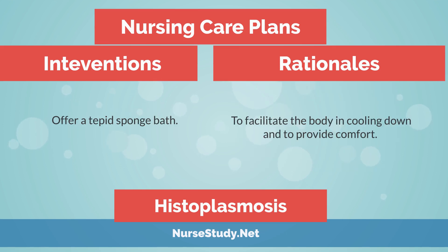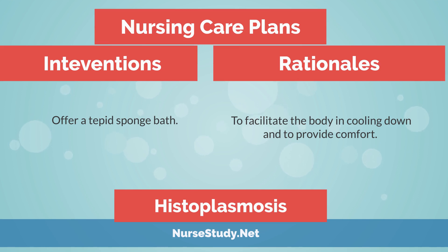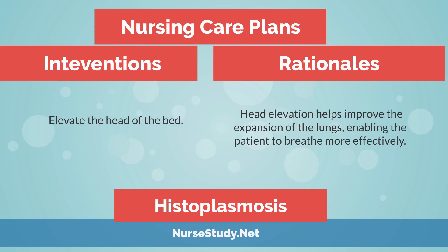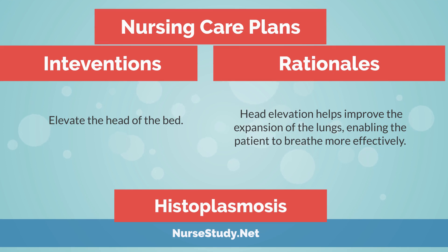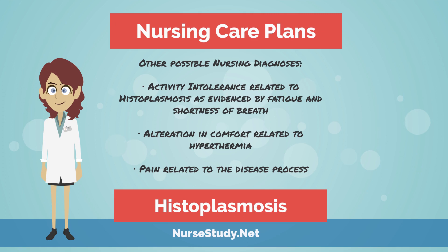Intervention: Offer a tepid sponge bath. Rationale: To facilitate the body in cooling down and to provide comfort. Intervention: Elevate the head of the bed. Rationale: Head elevation helps improve the expansion of the lungs, enabling the patient to breathe more effectively.